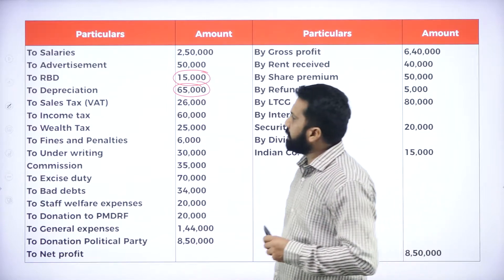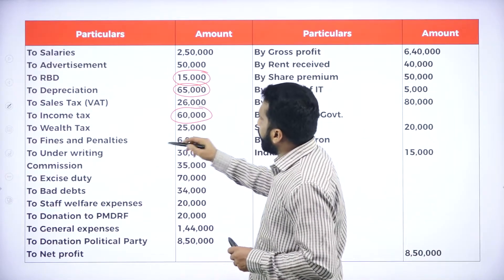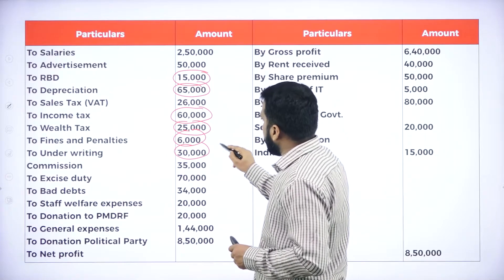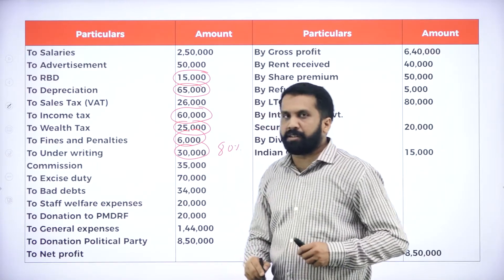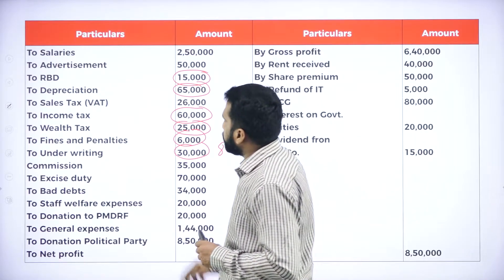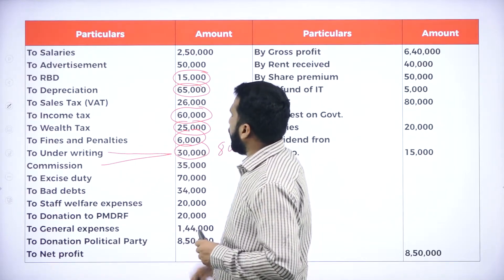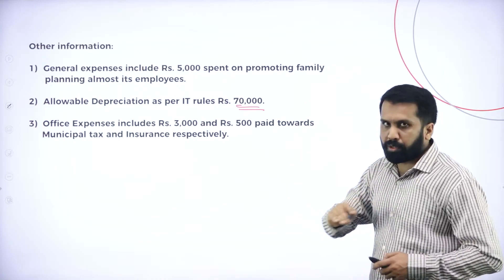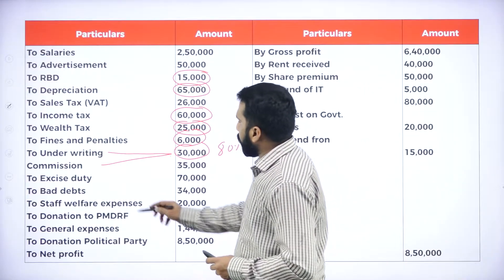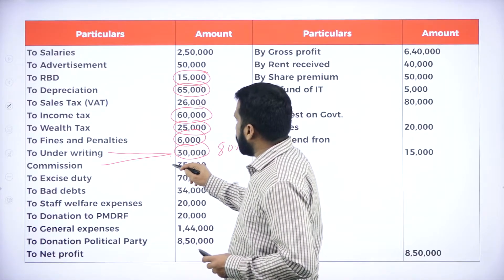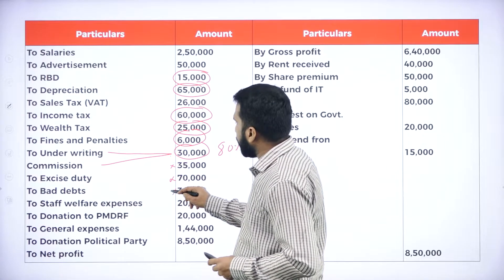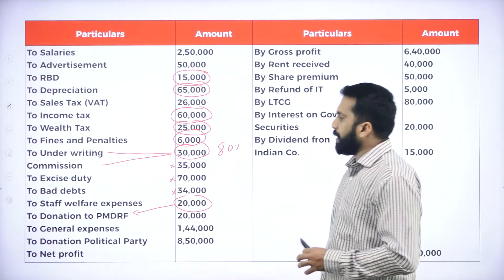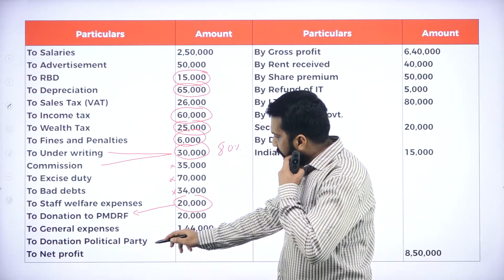Sales tax — it is a part of your business. Income tax — consider. Wealth tax — consider. Finance penalty — consider. Underwriters commission — consider, but only 80%, you are supposed to consider 80%. Excise duty — part of the business. Bad debts — do we have an adjustment? No, so we are not supposed to take it. Staff welfare — no. Donation to PMDRF — yes, we are supposed to consider. General expenditure — part of your business. Donation to political party — yes.